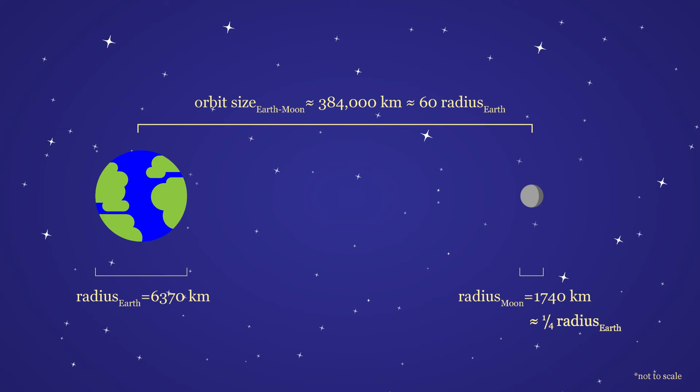The Earth's radius is about four times that of the moon. The moon-Earth distance varies, but averages about 60 Earth radii.